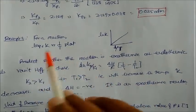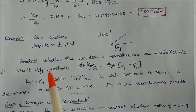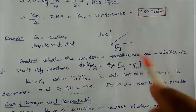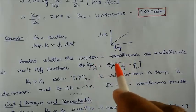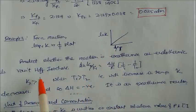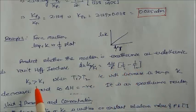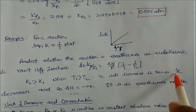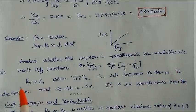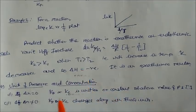Example two: a plot of ln K versus 1/T is given. We need to predict whether the reaction is exothermic or endothermic. From the equation ln(K2/K1) = ΔH/R × (1/T1 − 1/T2): if K is decreasing as temperature increases, this means ΔH is negative, so the reaction is exothermic. Conversely, if K increases with temperature, the reaction is endothermic.